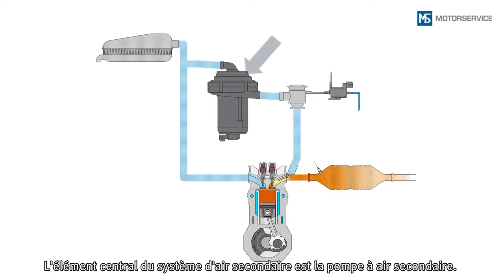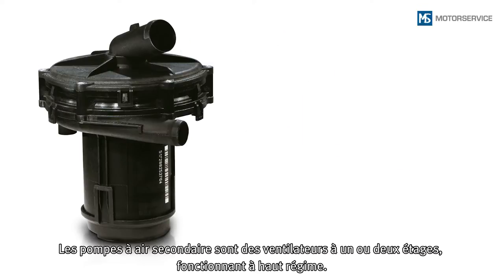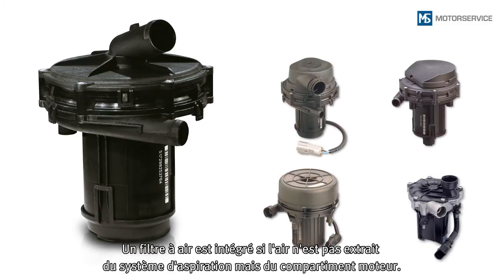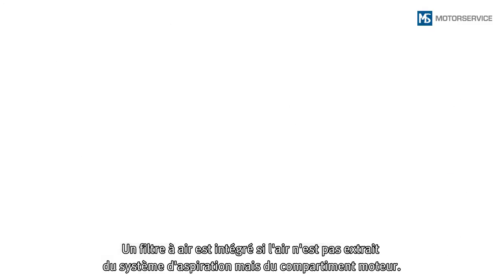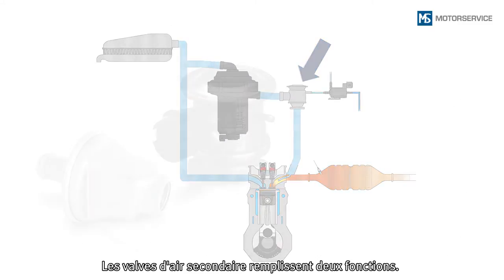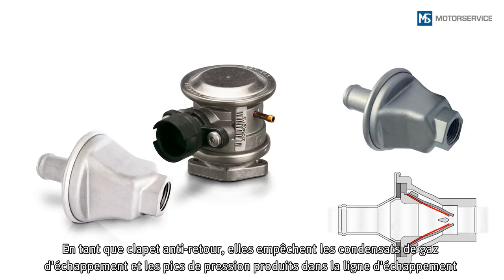The central component of the secondary air system is the secondary air pump. Secondary air pumps are high-speed single or multi-stage blowers. An air filter is integrated in cases where the air is extracted from the engine compartment instead of the intake air system. Secondary air valves have two functions.